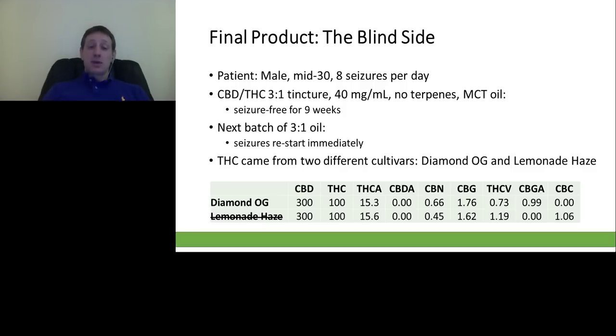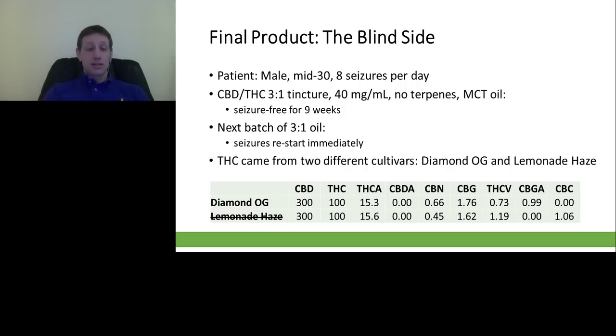This case should lead you to consider that if cannabis helps you for your problem, that doesn't mean a different strain will help you with the same problem, and that different production processes might change the molecular makeup. Even if two producers start with the same clones, they might end up with completely different molecular profiles in their products.